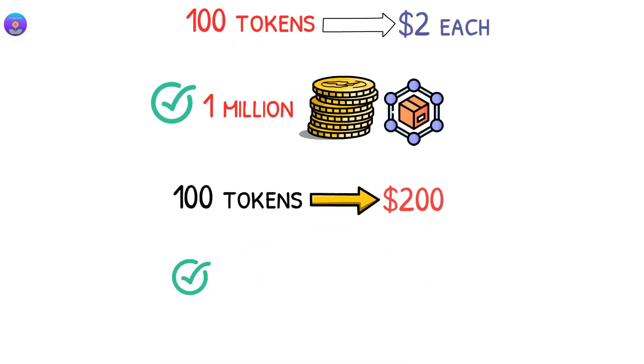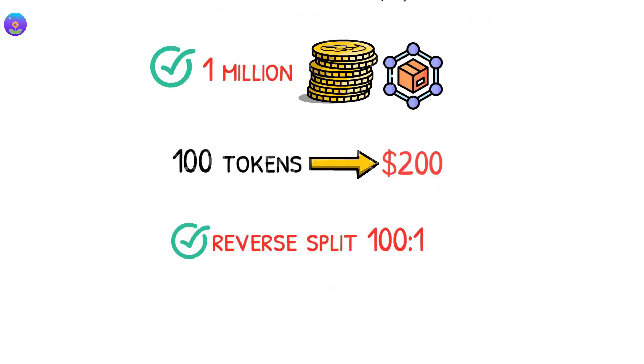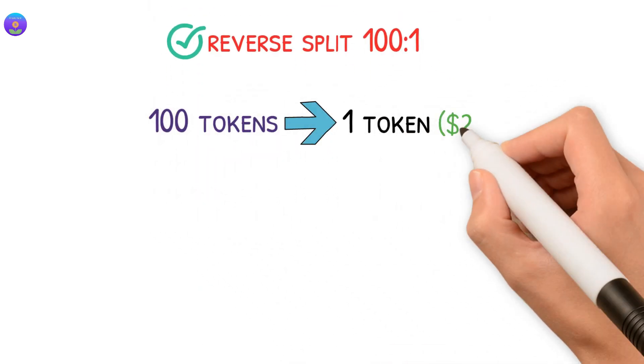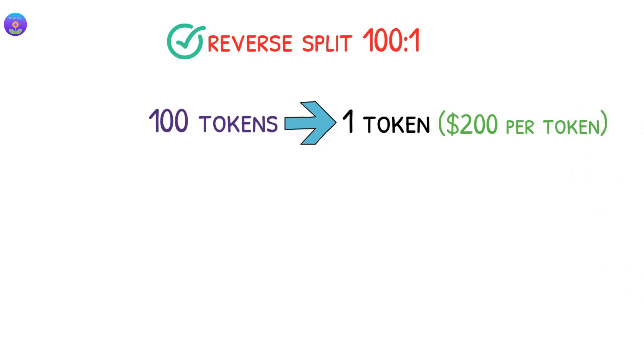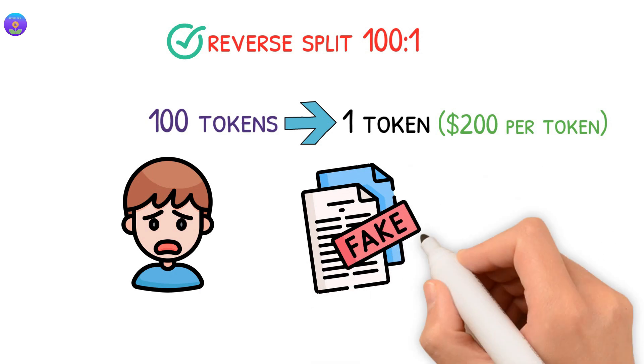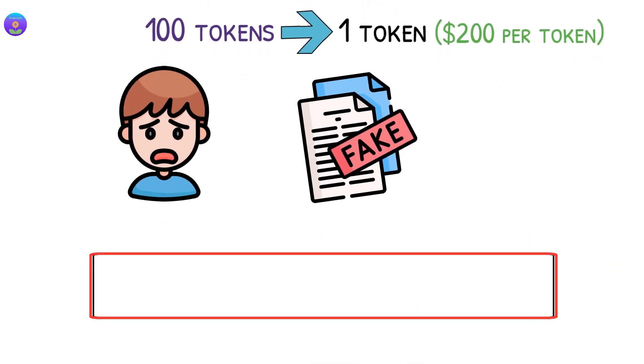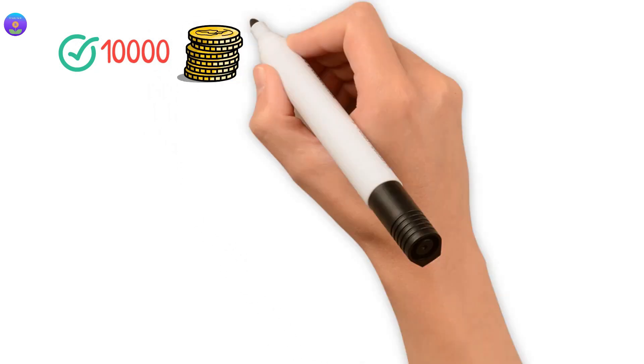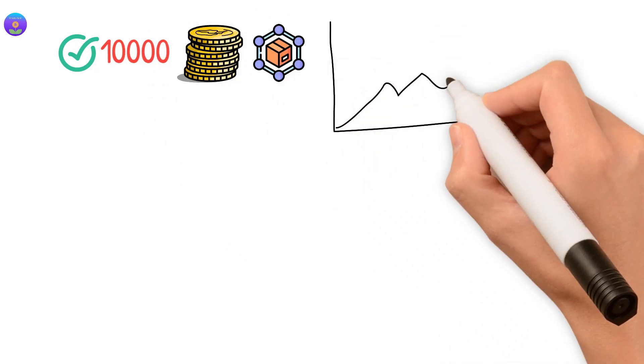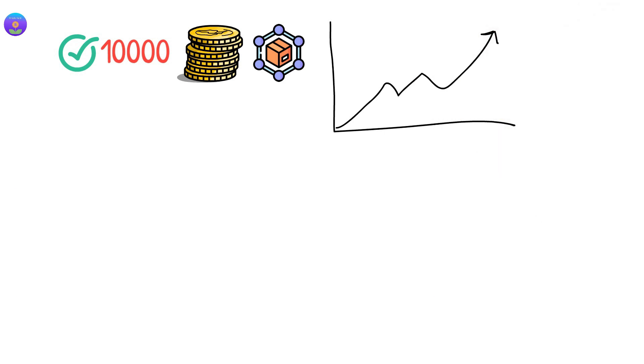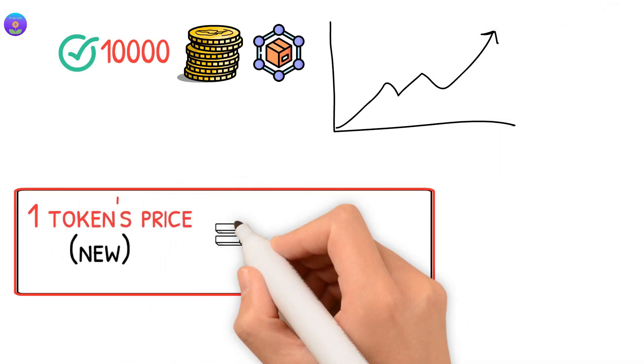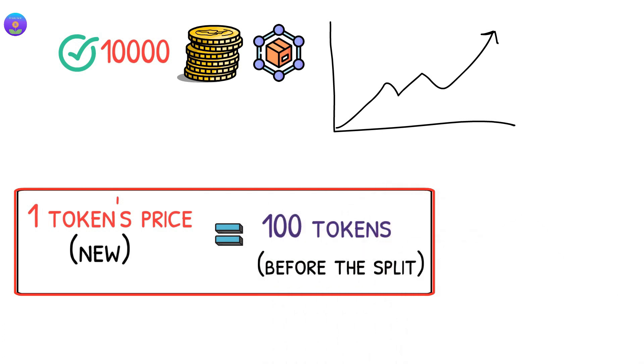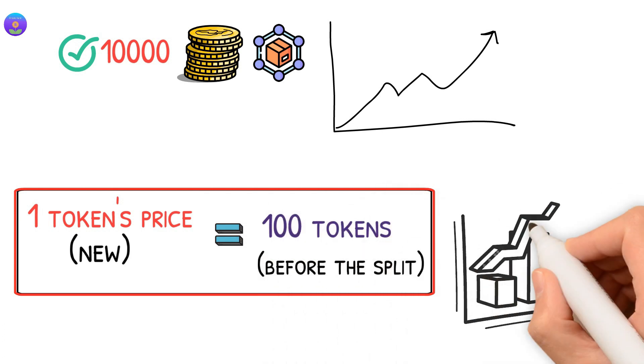This means you have 100 tokens that are worth $200. If the team decides to do a reverse split 100 to 1, this means the 100 tokens you have will become 1 token and the new price is $200 per token. You might get scared and say where are my tokens, this project has scammed me. Well, you are mistaken because now we will have a lower supply and higher price. So instead of having 1 million in the circulating supply, we will have 10 thousand in the circulating supply, so we will have more room for the price to increase.